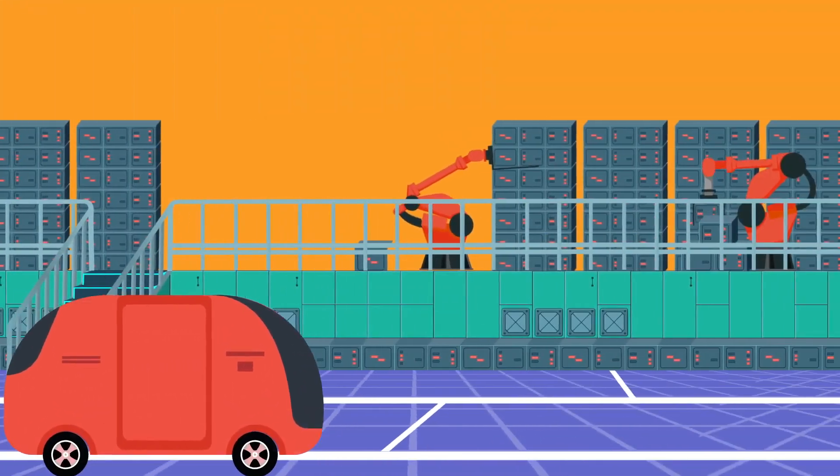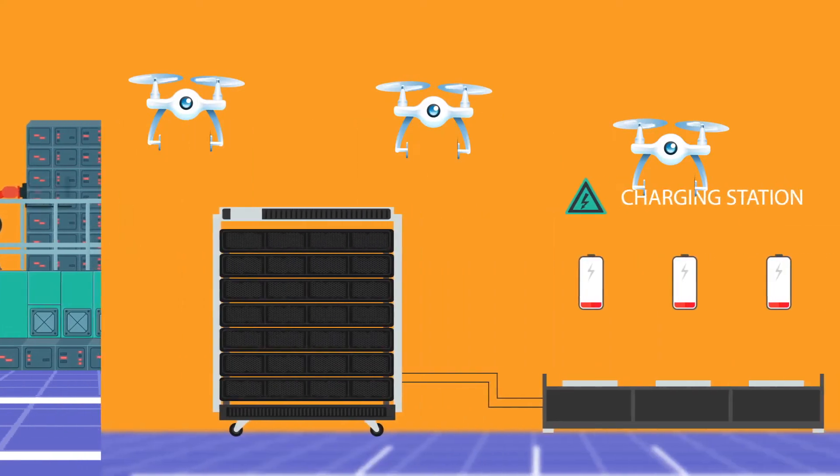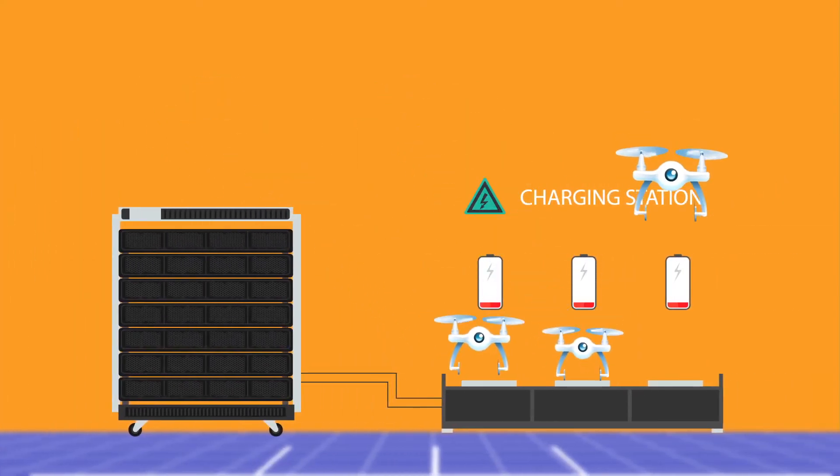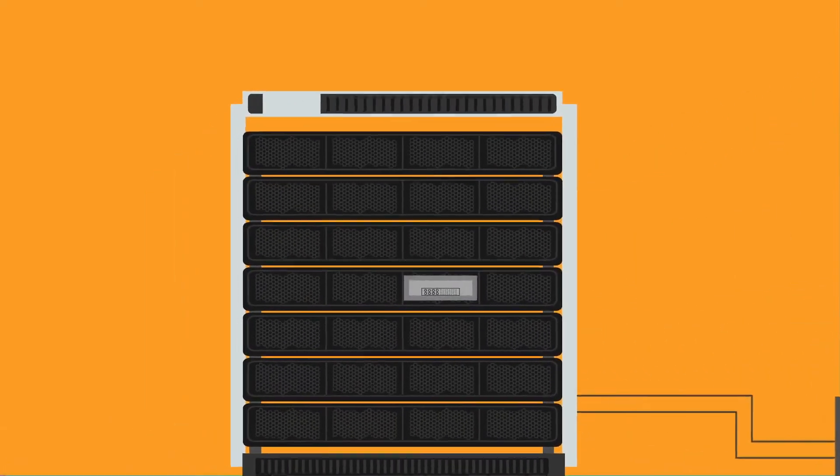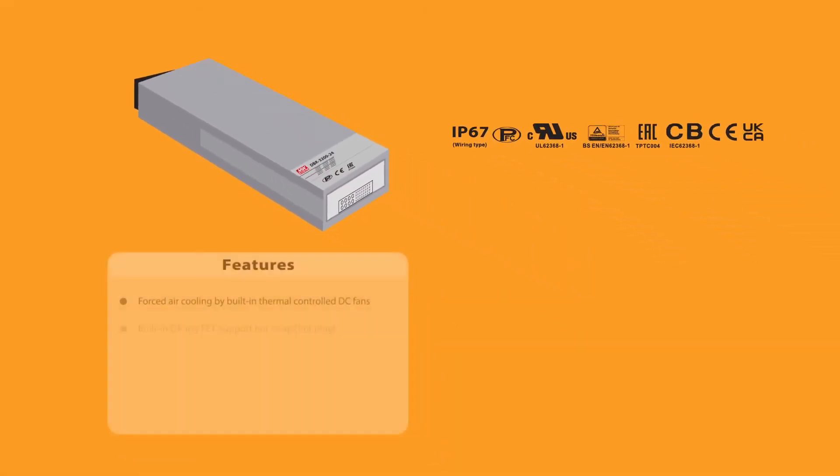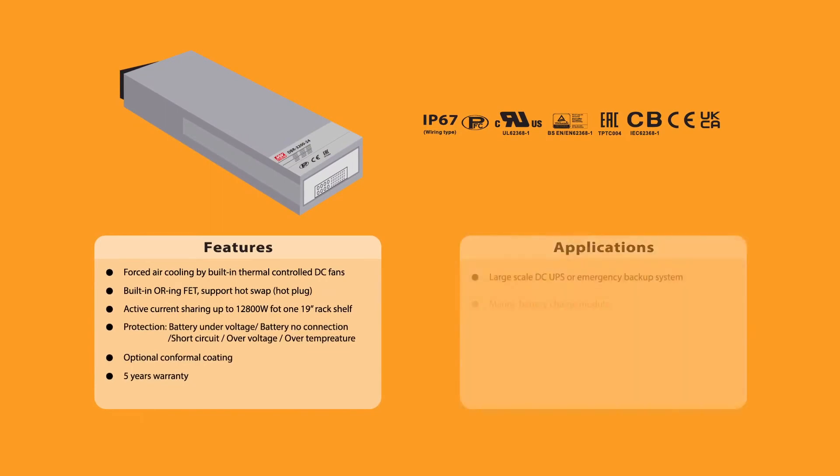What's more, he even deployed the DBR 3200 series of front-end battery chargers to his drone charging stations and improved their performance by leveraging its special capabilities such as large-scale capacity, programmable voltage curves, near universal compatibility, and more.